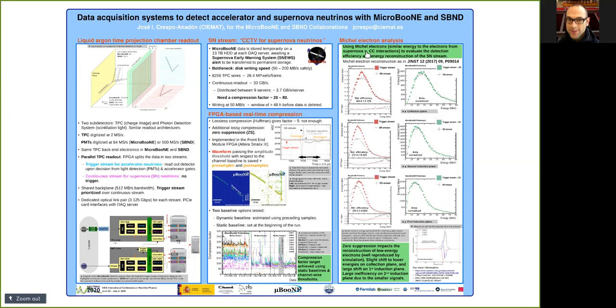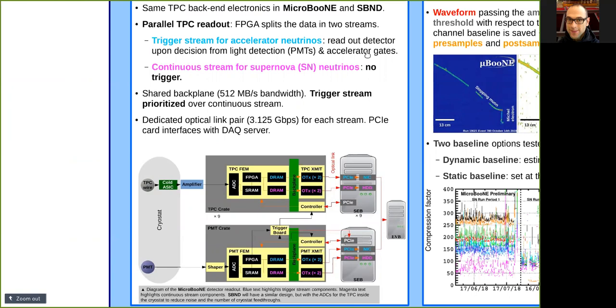MicroBooNE and SBND are liquid-argon time projection chamber detectors at Fermilab. A unique feature of their DAQ is that they have a parallel TPC readout in which an FPGA splits the data into two streams.